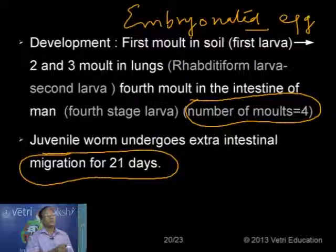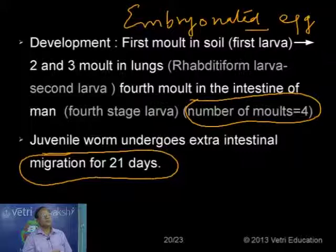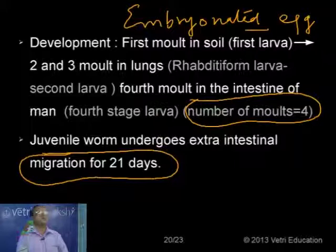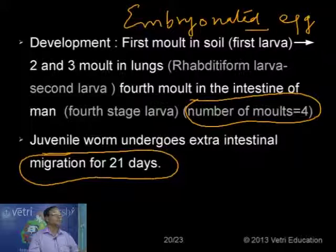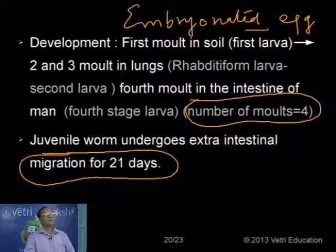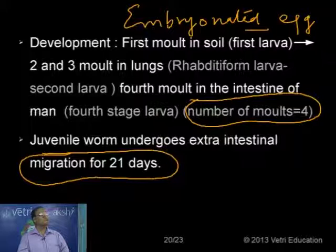After completing the first molt in soil, once consumed, it reaches the intestine, then liver, liver to heart, heart to lungs, lungs to pharynx, pharynx to mouth, then through esophagus and stomach once again to the intestinal region where it stays for normal growth and development. The time duration for extra-intestinal migration is about 21 days. During this migration the animal completes the remaining three molts — second and third molts in the lungs, fourth in the intestine.